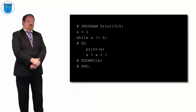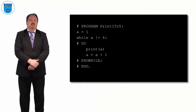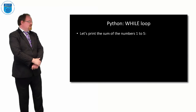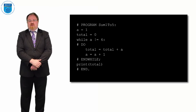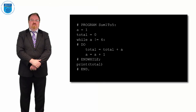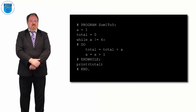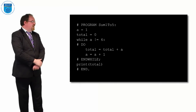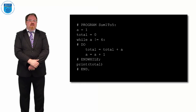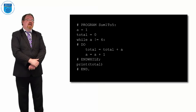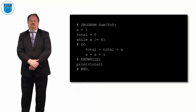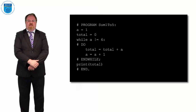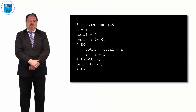Let's print out the sum of the values 1 to 5. A is 1, the total is 0. While a is not equal to 6, do: total gets total plus a. If a starts off as 1 and total is 0, total becomes 1 plus 0 which is 1. We add 1 onto a, it's 2, then total gets 2 plus 1 which is 3, and so on. Then we print out that total - the numbers 1, 2, 3, 4, 5 added up. Exactly as we did in the pseudocode.